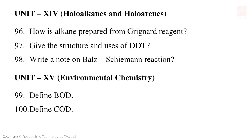Unit 14: Haloalkanes and Haloarenes. Important question: how is alkyne prepared from Grignard reagent (3 mark), DDT structure and uses (important question).